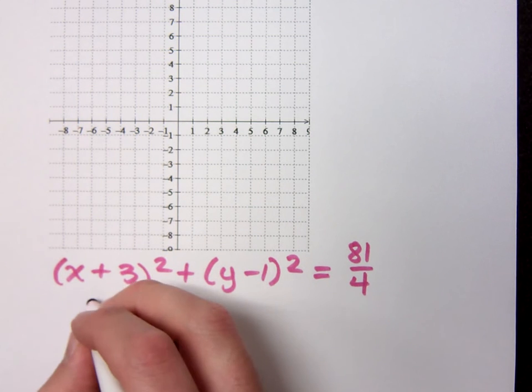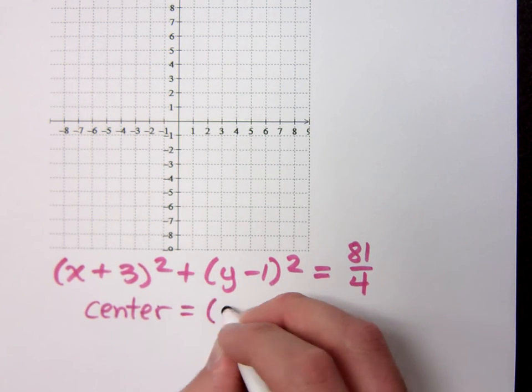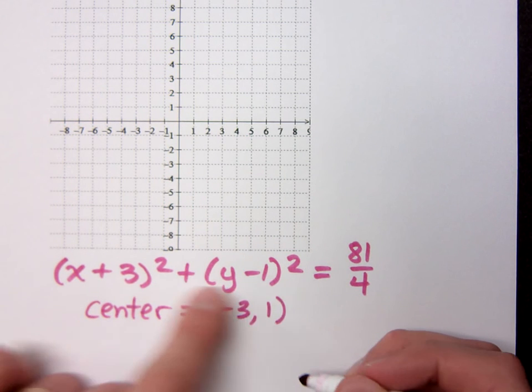so we shouldn't have any problems identifying this center. What's the center point? Negative 3, 1. Remember, you do the opposite of what you see here.